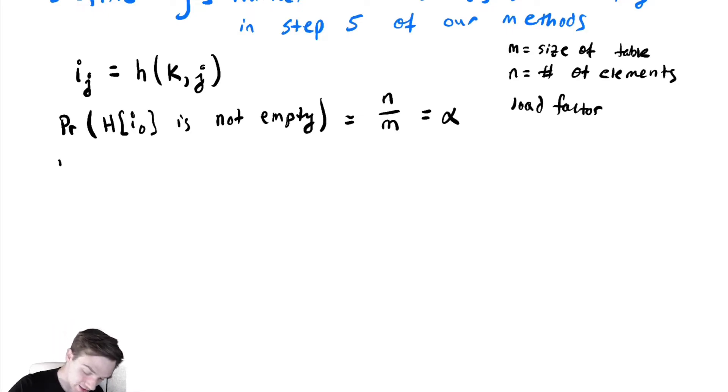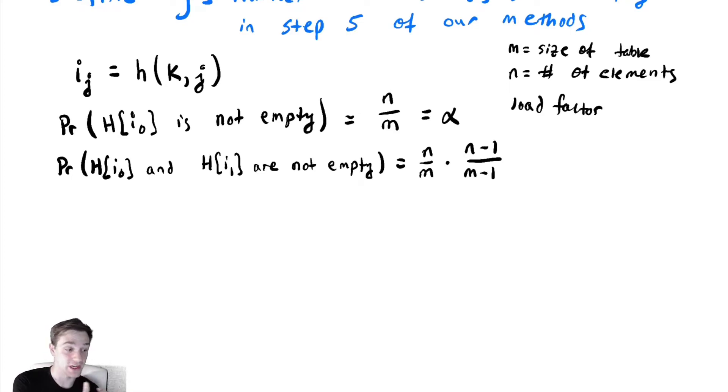Let's discuss the probability that h[i_0] and h[i_1] are not empty. For that to be true, h[i_1] had to be empty and h[i_2] would not be empty, with n-1 locations if we never rehash to the same location again, and m-1 possibilities. This assumes we never reach that first location again, which with a good method won't happen.